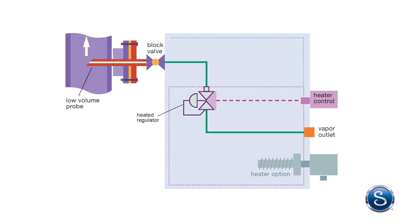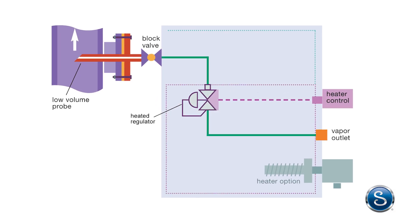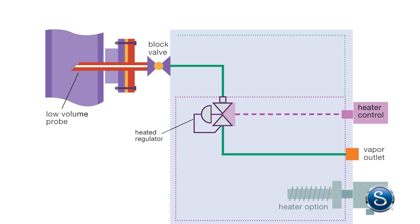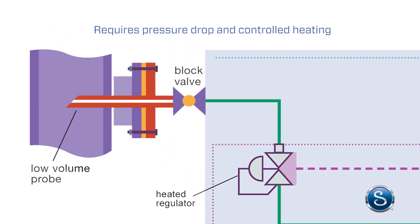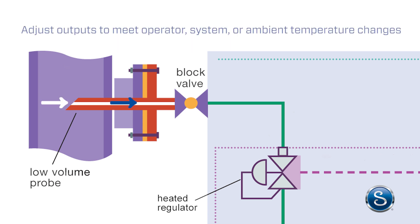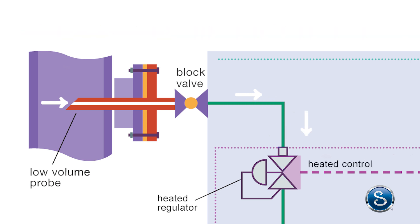When processing samples, sometimes it's necessary to transition liquid process fluid to a vaporized sample stream. You may also need to maintain the temperature of a vapor stream to avoid condensation. Vaporization requires a pressure drop and controlled heating. If a vaporizing regulator cannot adjust its output to meet operator, system, or ambient temperature changes, resulting samples could be invalid, or the regulator itself may not work correctly.